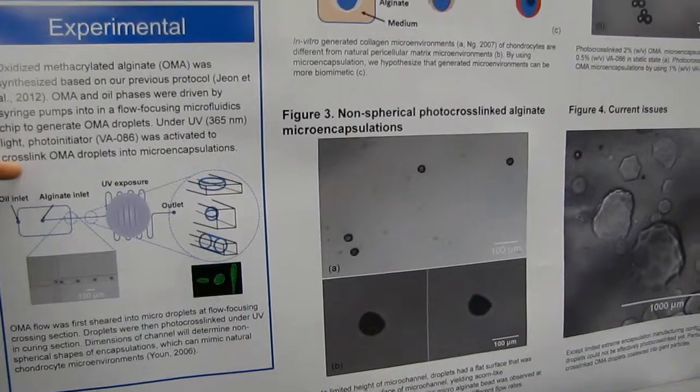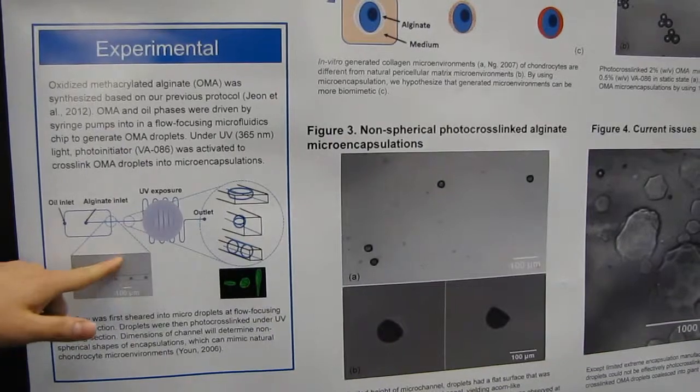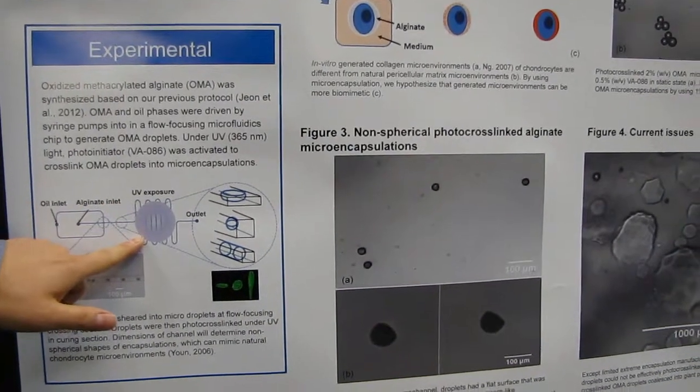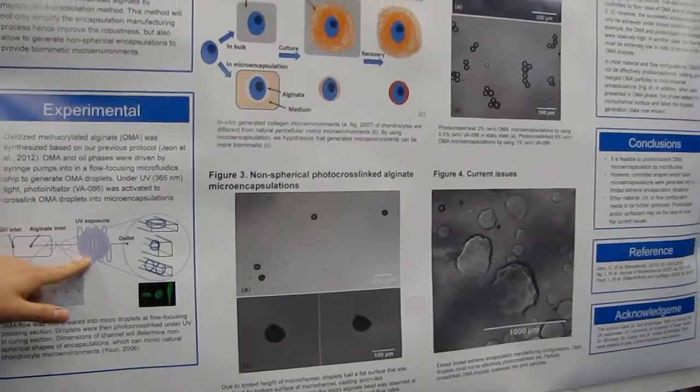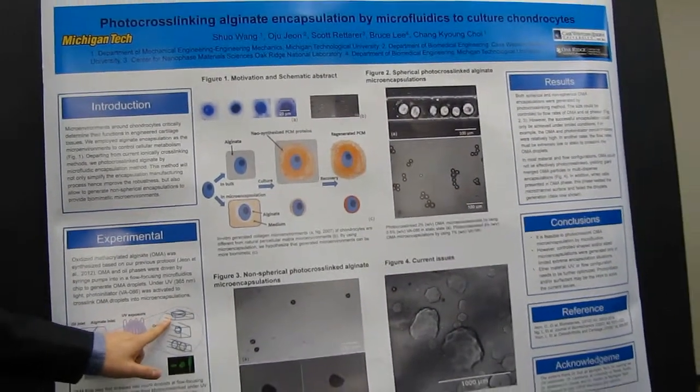Besides using microenvironment to make the cells function, another novelty I'm using is photo cross-linkable alginate to cross-link the alginate into beads from liquid droplets. This is different from what people normally do — they use ionically cross-linkable alginate, and in that case the system will not be very robust.